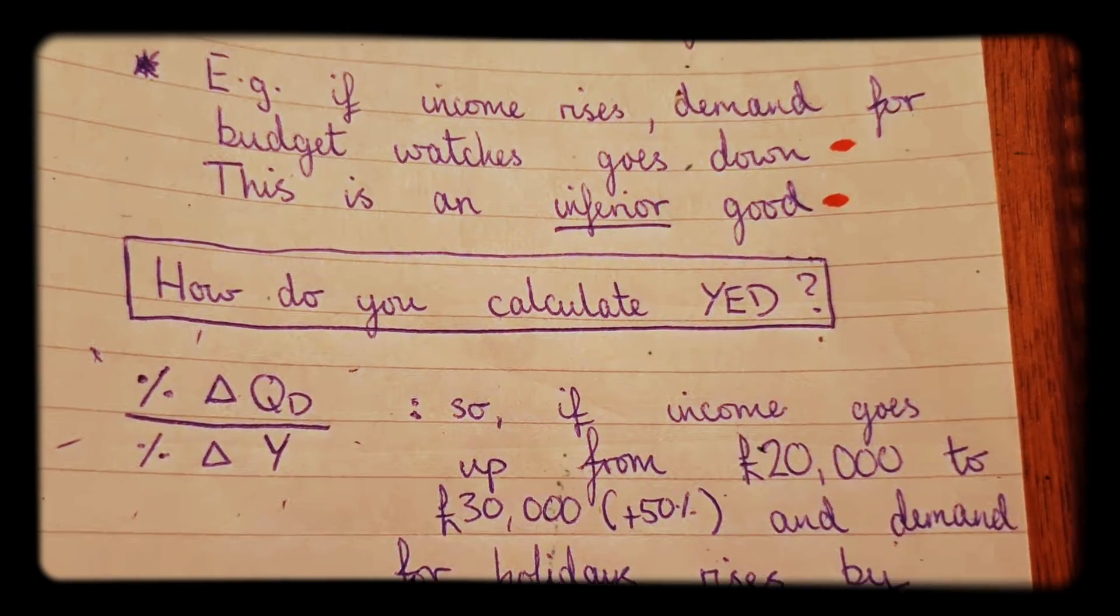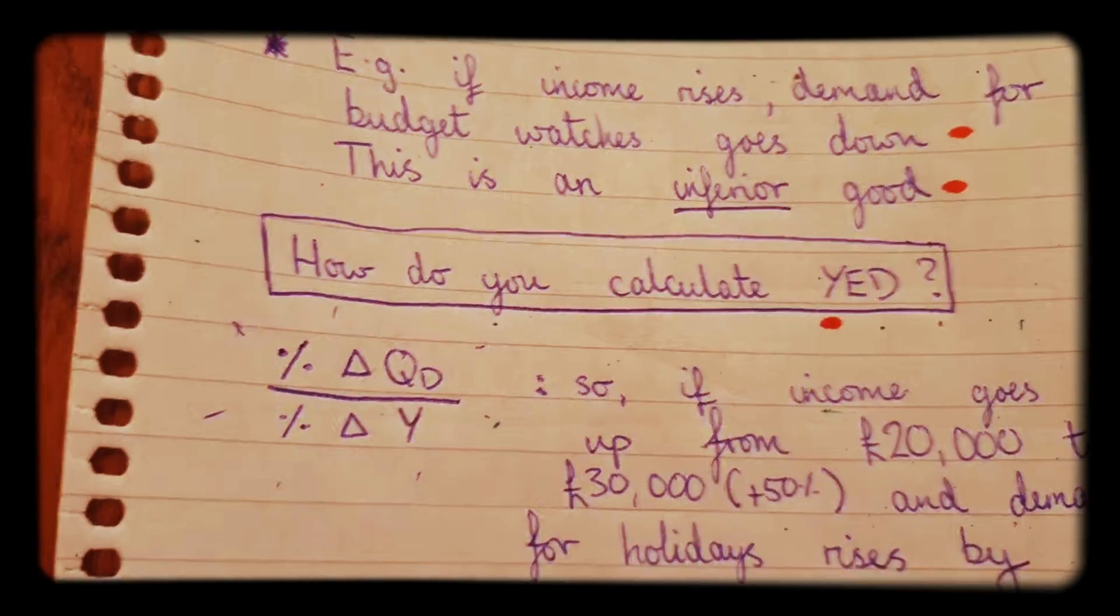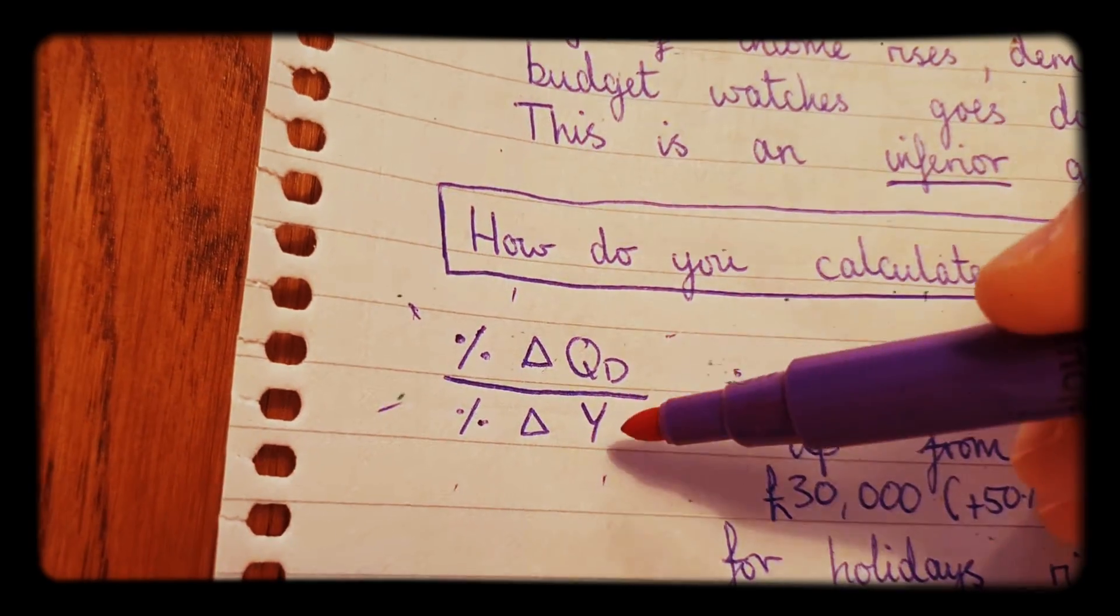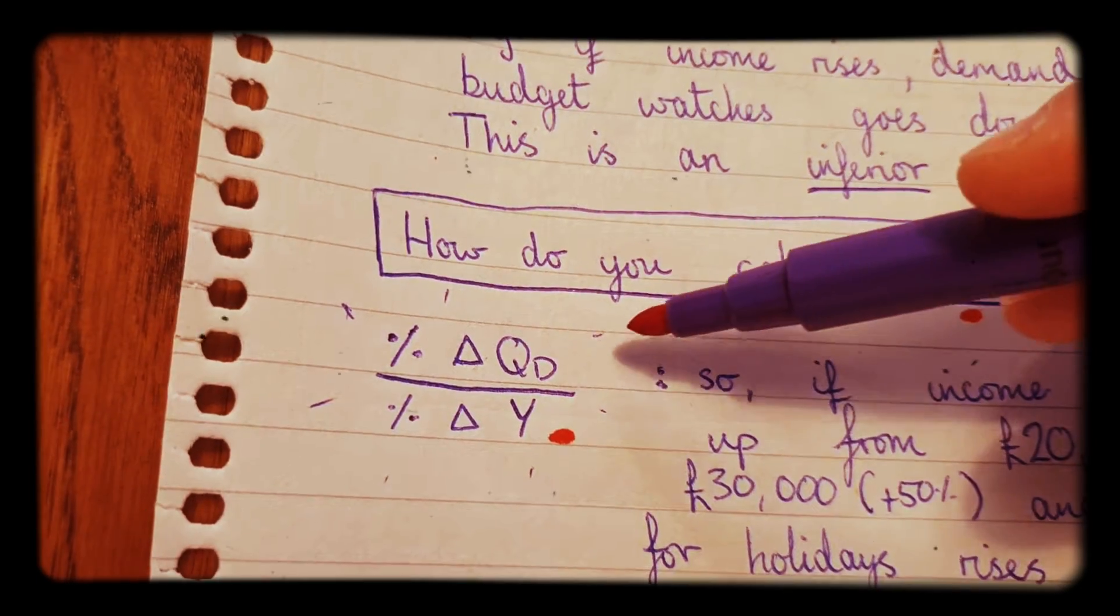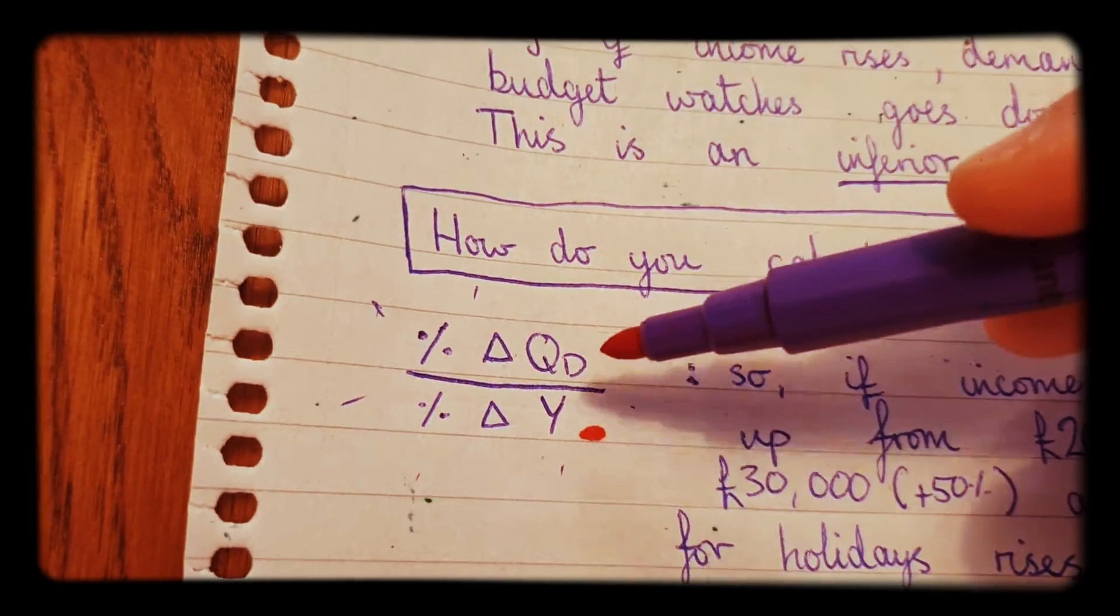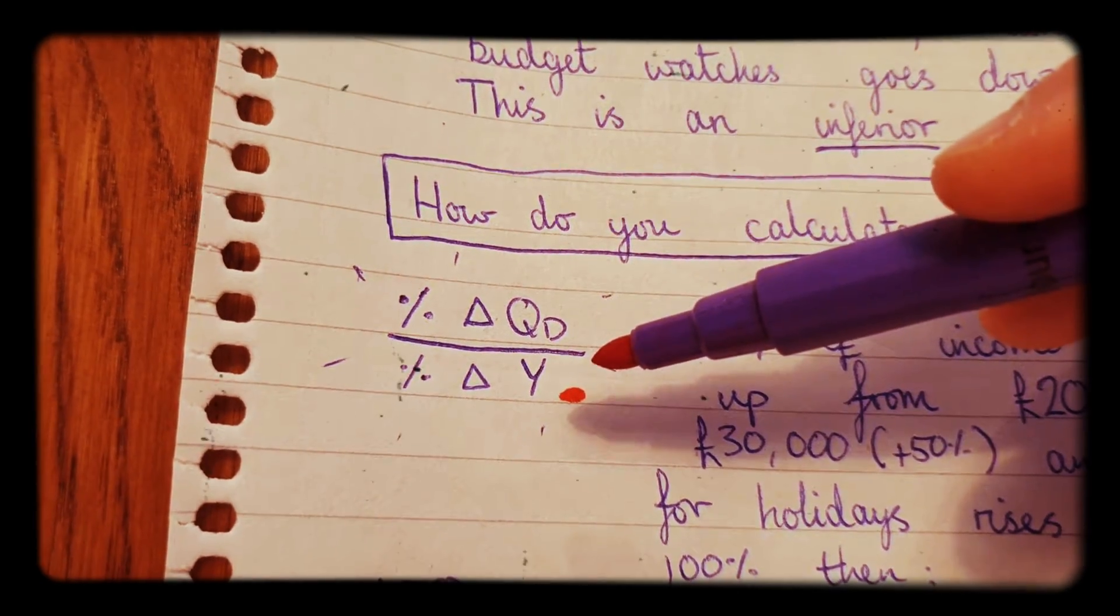So how do you actually calculate YED then? How do we calculate that from data that we've been given? So here is the formula for YED. It's the percentage change in the quantity demanded, so quantity demanded at the top, all over the percentage change in income.